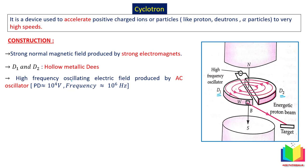Next is the high-frequency oscillating electric field produced by an AC oscillator. A high-frequency AC voltage is provided here with a frequency of 10⁶ Hz or even higher. This means the AC becomes positive or negative 10⁶ times per second. It provides a very high potential difference of 10⁴ volts. This electric field is provided in the region between the two D's — the gap — because that is where we want to accelerate the charge.